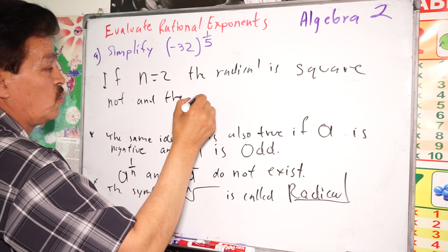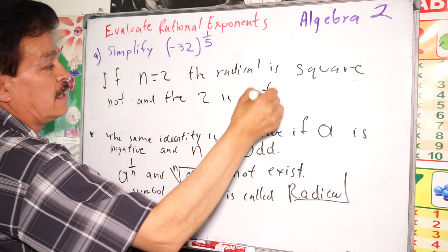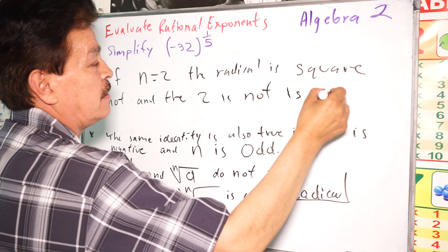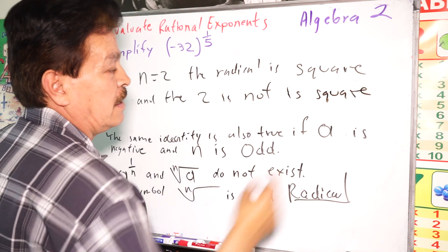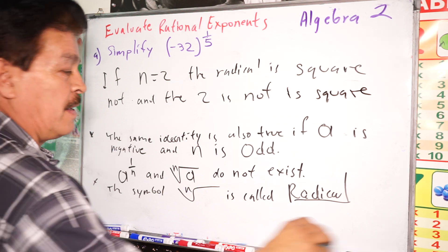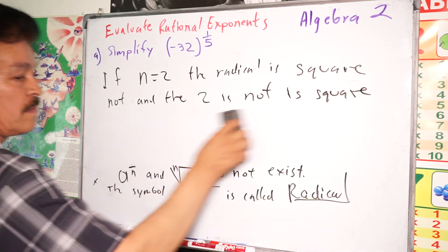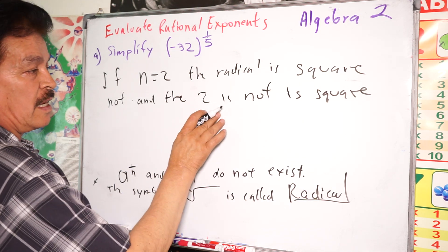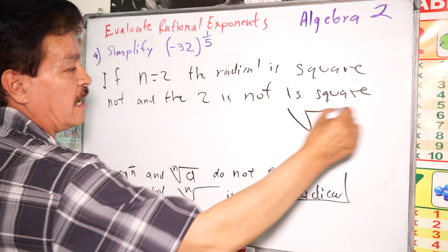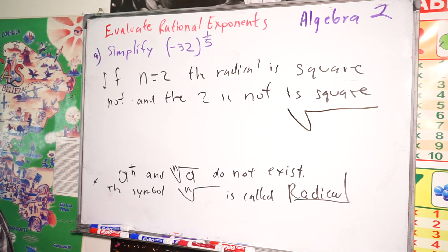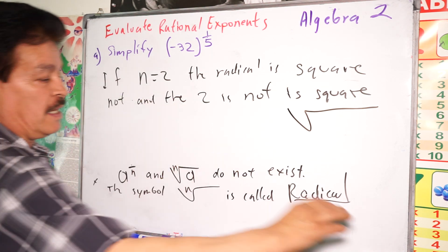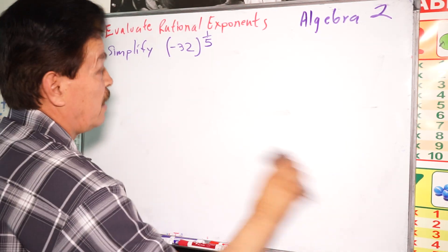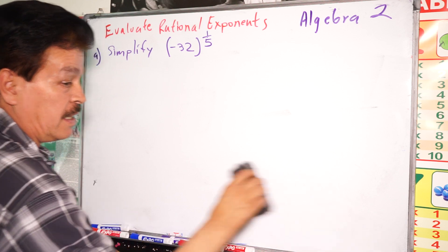If n is not 2, the root is not square. So the radical is like this. Some ideas that are very important, keeping in your mind before working with radicals, with rational exponents.